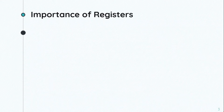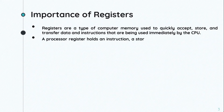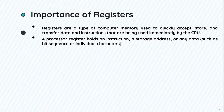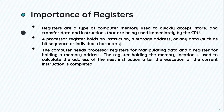The importance of registers: they are a type of computer memory used to quickly accept, store, and transfer data and instructions that are being used immediately by the CPU. The processor register holds an instruction, storage address, or any data such as a bit sequence or individual character. The computer needs a processor register for manipulating data and a register for holding a memory address. The register holding the memory location is used to calculate the address of the next instruction after the execution of the current instruction is completed.